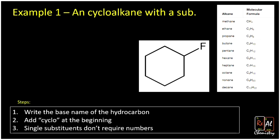Let's jump into our first example: a cycloalkane with a substituent. How do we name this? Well, first we're going to start off by counting our carbons so that we get the right base name. We count one, two, three, four, five, six — it makes a hexagon with six carbons.